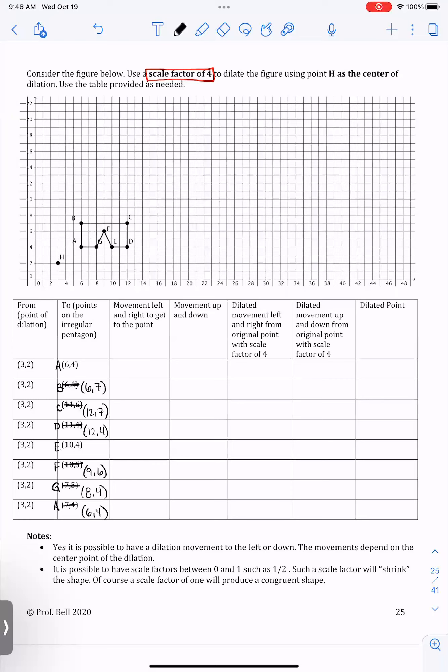Okay, if your table now matches mine, then what we want to do is look at our point of dilation and figure out how far away each point in our pre-image is from the point of dilation. So we'd start, for example, by going from point H to point A, which means we would walk to the right three units and then up two units. So that's right three, up two.